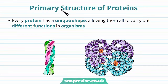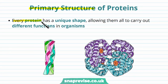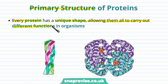The first level of structure for proteins is known as its primary structure. There are different hierarchies of structure for proteins. Every single protein that we find in any cell or any organism has its own unique shape. These shapes can be very complicated because there are lots of amino acids involved, and the unique shape allows them to carry out their own specific function in any organism.